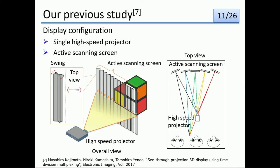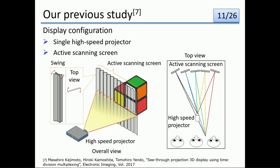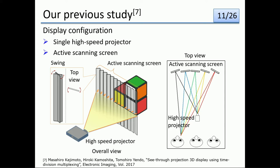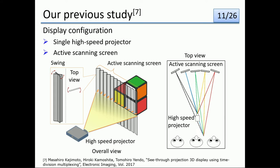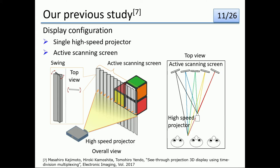Our previous study consists of a single high-speed projector and an active scanning screen. The active scanning screen has a mechanism to scan by reflected light rays, and scans light rays by swinging the screen. This screen has the characteristic of specular reflection in the horizontal direction and diffuse reflection in the vertical direction. In our previous study, the direction of light rays reflected by the screen changes as the screen swings. By switching the projected image according to the direction of reflection, different images can be displayed depending on the viewing position.